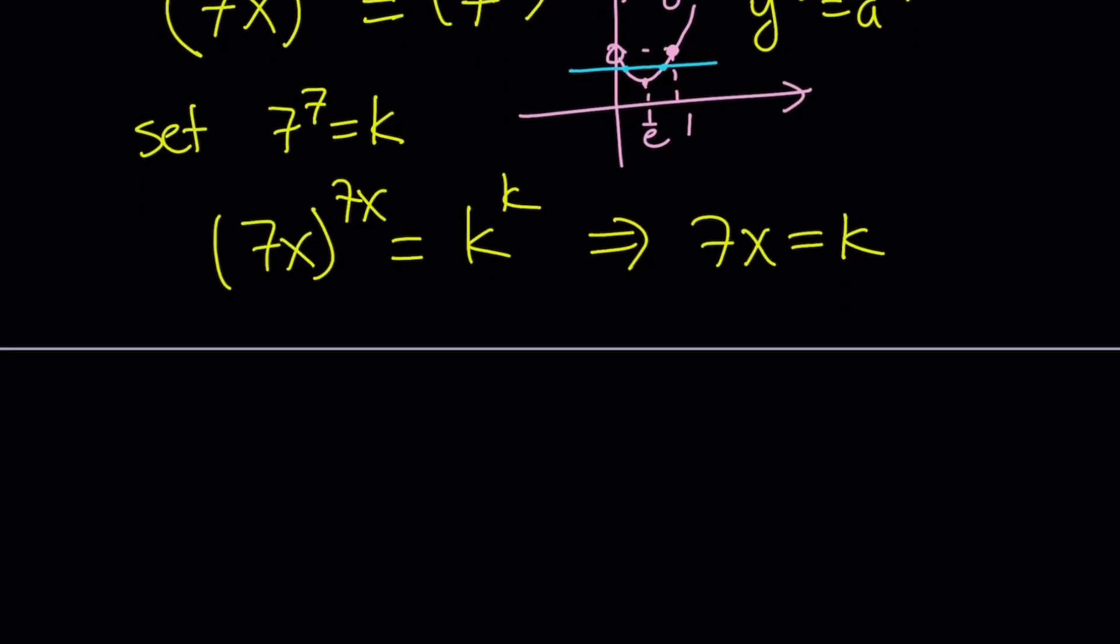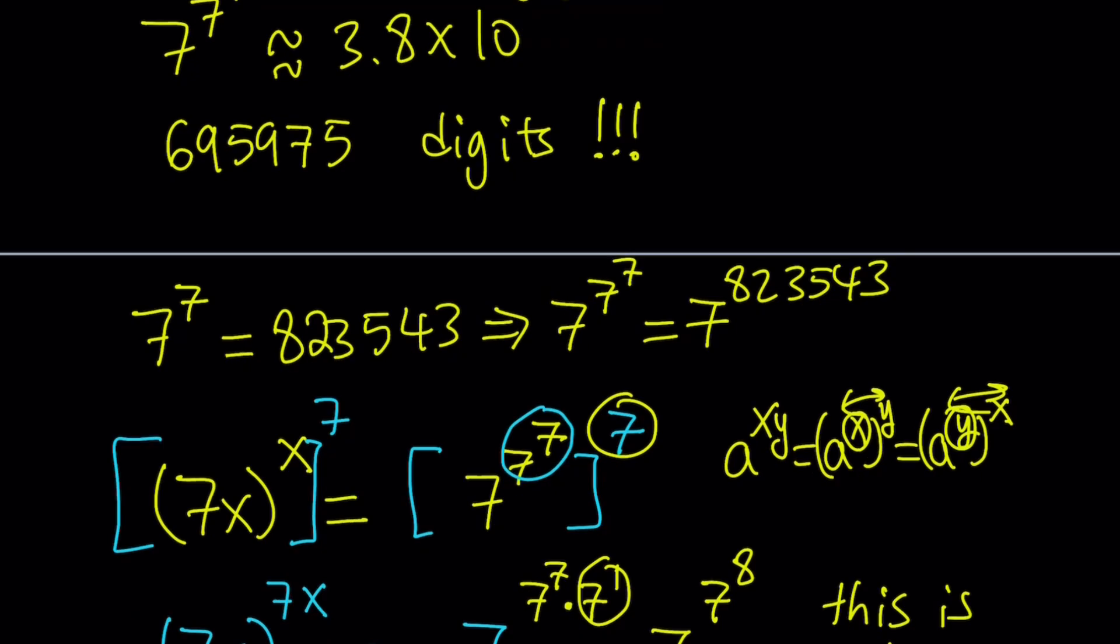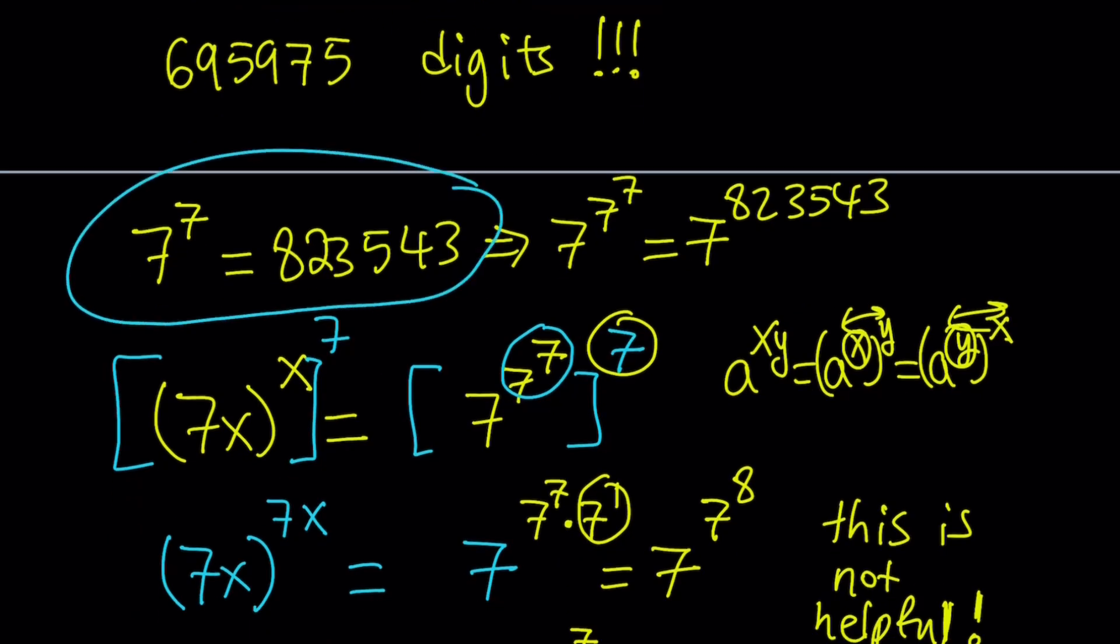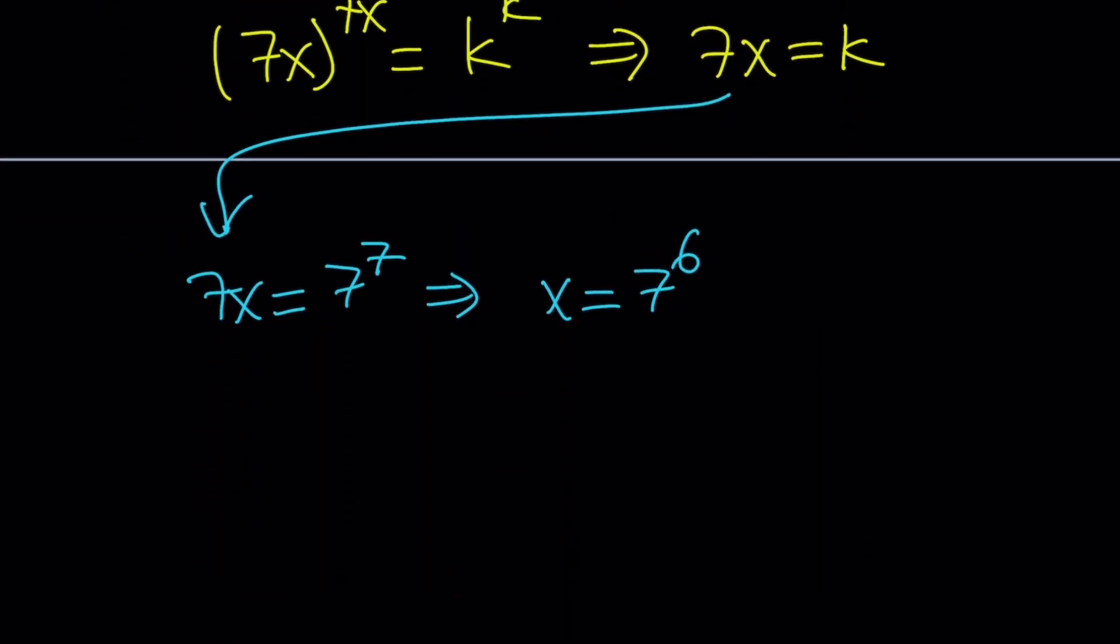So from here we got 7x equals k, but what is k? k is 7 to the 7th. So if you go ahead and follow up on this, 7x equals k, which is 7 to the 7th power. Finally, we're going to divide both sides by 7, and that's going to give us x equals 7 to the power 6. Great. Now, what is the value of that? Now think about 7 to the 7th power. How large was that? It was something like 800,000. So this is probably going to be 100,000 something, right? And the exact value of 7 to the 6th power is going to be 117,649. So that's going to be the answer.